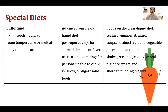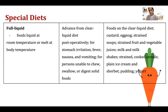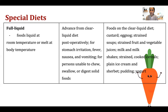After clear liquids, the diet progresses to full liquid diet — foods that are liquid at room temperature or melt at body temperature. It is useful for post-operative patients, stomach irritation, fever, nausea, vomiting, and for persons unable to chew, swallow, or digest solid foods. Sources include all clear liquids plus custard, eggnog, strained soups, strained fruit and vegetable juices, milk, shakes, strained cooked cereals, plain ice cream, and sherbet. Colored fluids like milk can now be given.